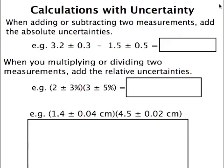Now when you're carrying out calculations with your uncertainty, when you're adding or subtracting two measurements, the basic rule is going to be that you're going to add the absolute uncertainties. So when you have these two numbers and you're subtracting them, what you would do is you would first subtract the numbers, so 3.2 minus 1.5, and then you would add the uncertainties. So your final answer is going to be 1.7 plus or minus 0.8.